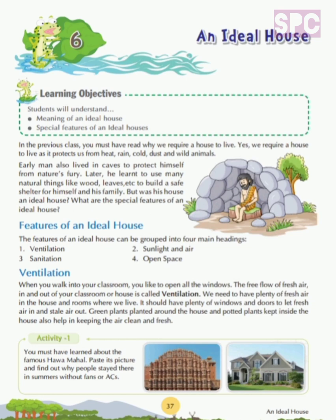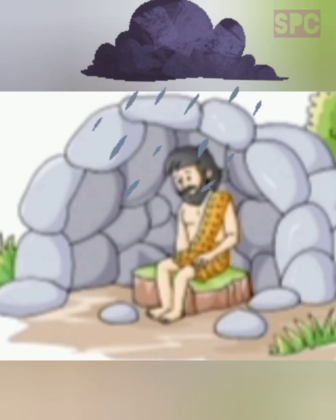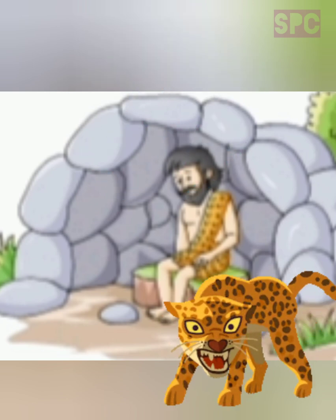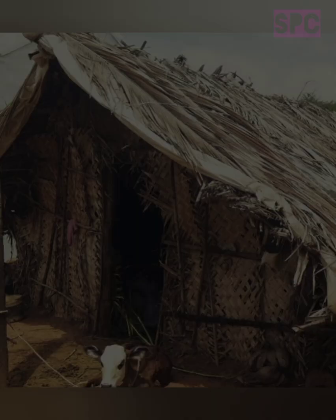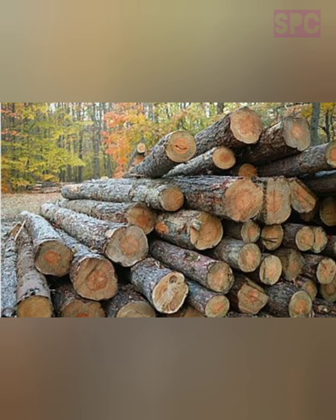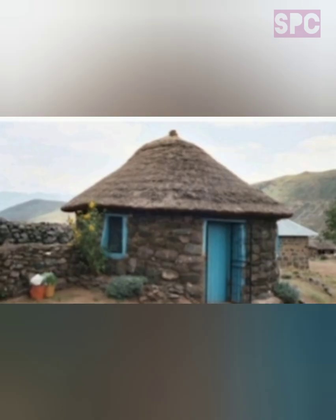But was this house an ideal house? What are the special features of an ideal house? As we all know, necessity is the mother of invention. In early times, man felt the need of having a shelter to protect himself from harsh weather conditions and wild animals. So first he took shelter in caves, and later he made houses using natural resources like wood, leaves, stones, etc.